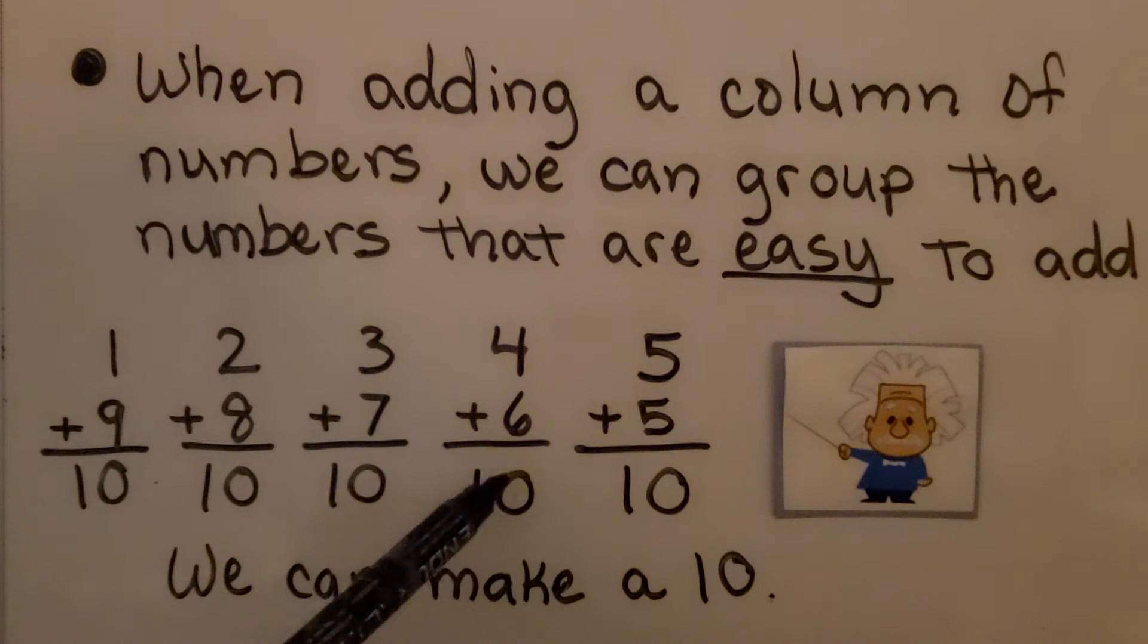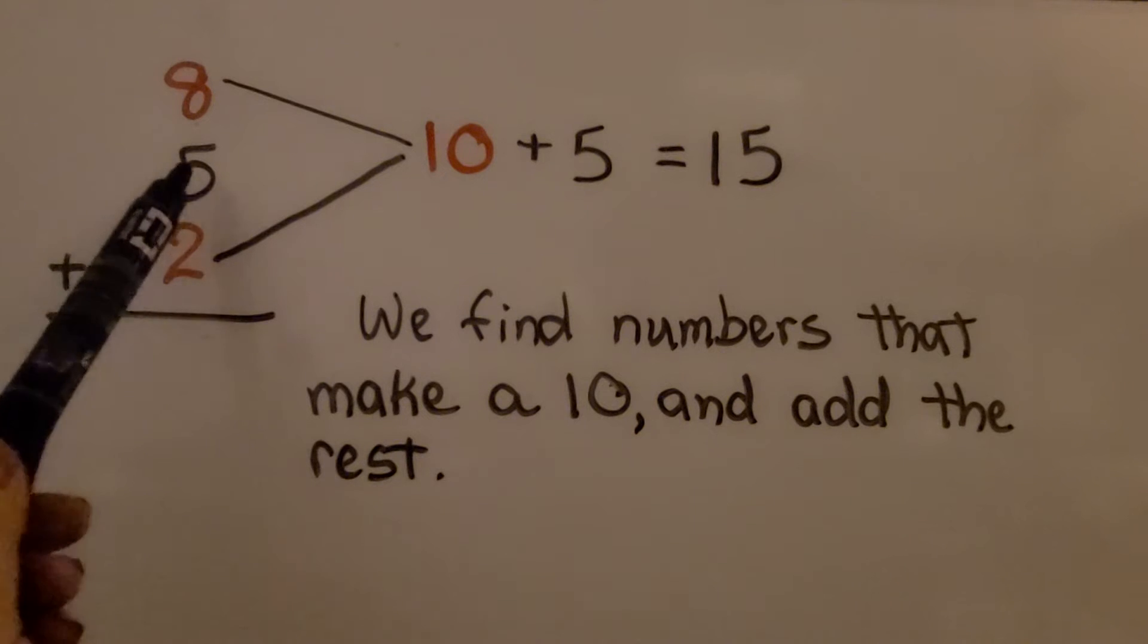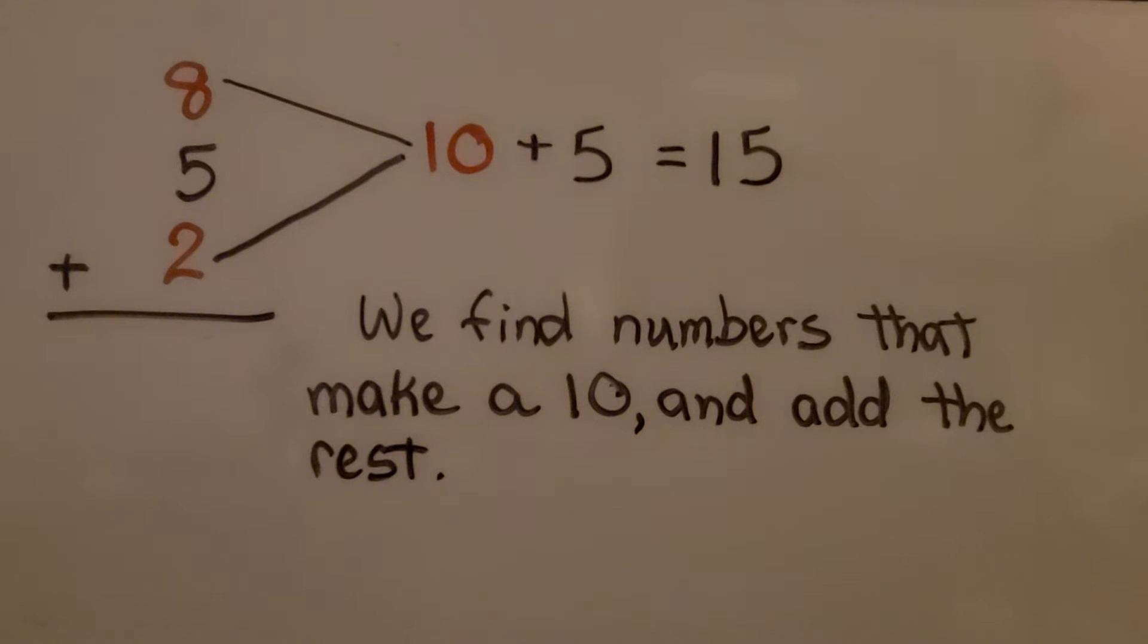We find numbers that will make a 10. Here we have 8 plus 5 plus 2. If we know our facts that equal 10, we know that 8 plus 2 equals 10. Then we can just add the 5. We can go quickly. 10 plus 5 is 15.